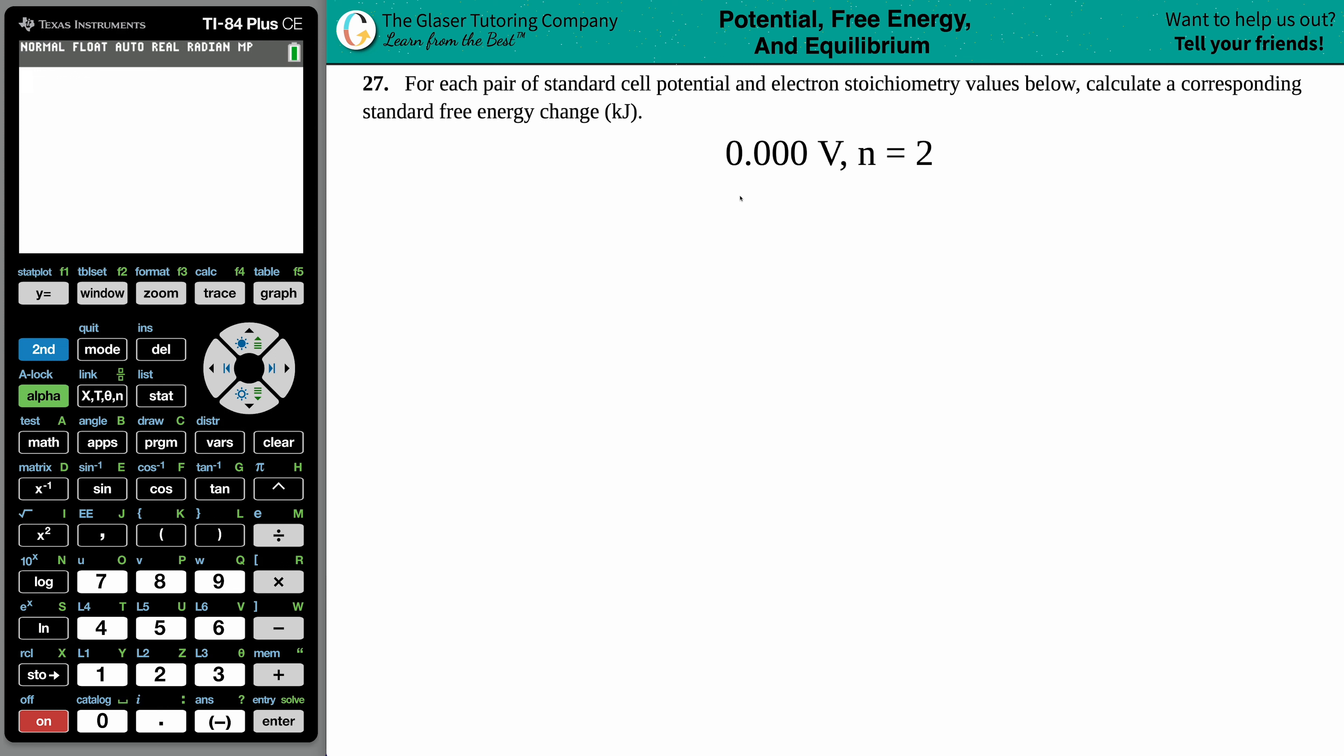Number 27. For each pair of standard cell potential and electron stoichiometry values below, calculate a corresponding standard free energy change, and they want that in kilojoules.